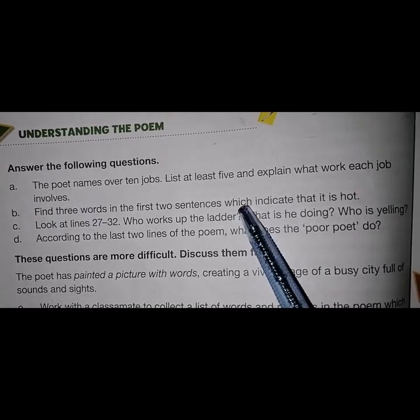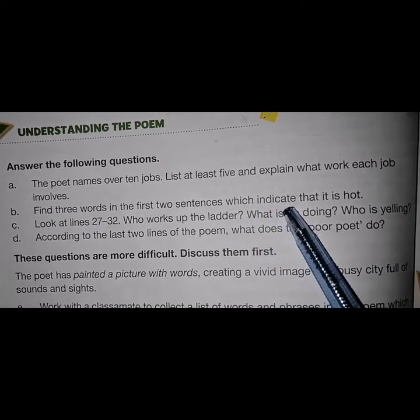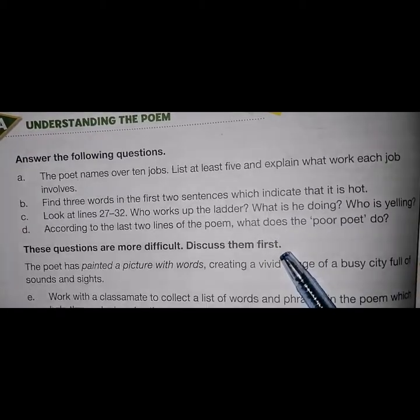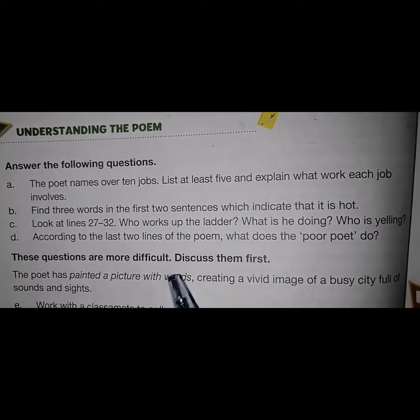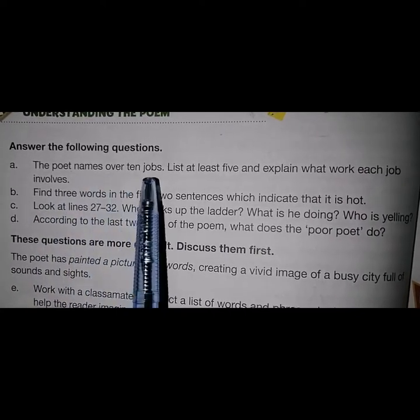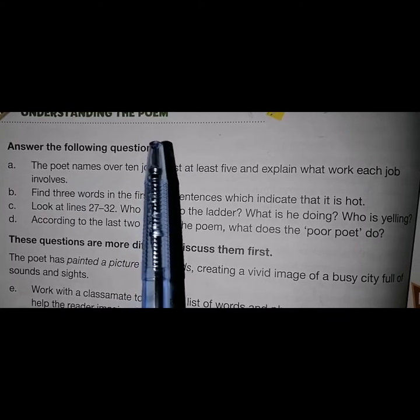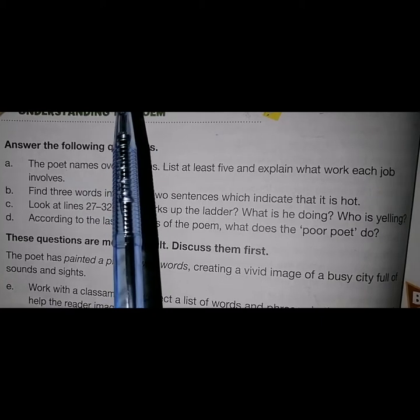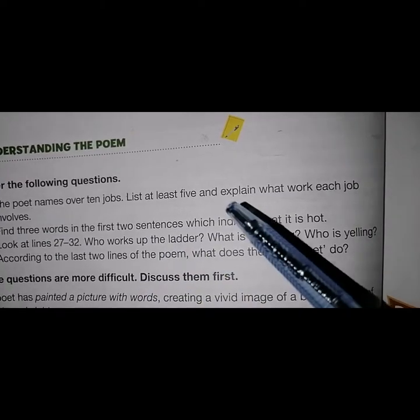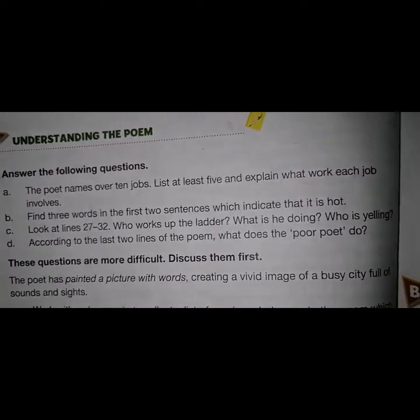These are the questions. You are to read all these questions carefully and you are to answer them as well. You are to consider your poem as a comprehension paragraph and you are to write the answers of all these questions. For example, the poet names over 10 jobs — list at least 5 and explain what work each job involves. The job of a chimney boy, the rattling of milk pails, the dinner of hackney coaches, the job of trunk makers, the job of knife grinders — 5 jobs. You are to search the answers of all these questions from your poem.